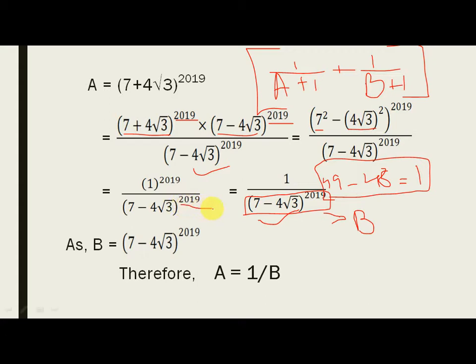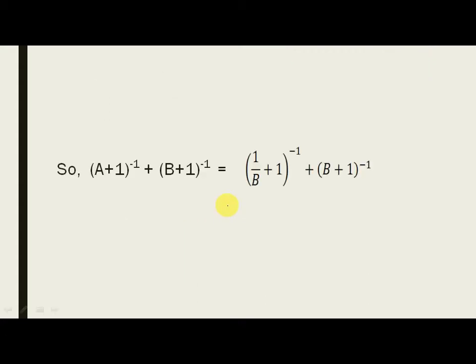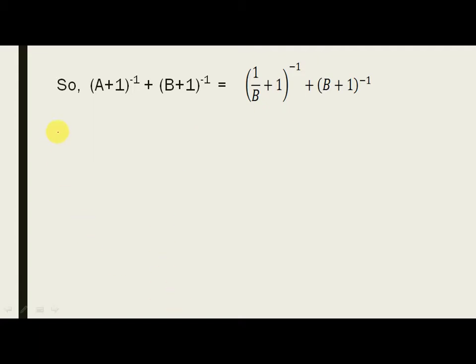Now, we were asked the value of A plus 1 to the power minus 1 plus B plus 1 to the power minus 1. We know that the value of A is 1 by B. So, instead of A, I write 1 by B plus 1 power minus 1 plus B plus 1 power minus 1.